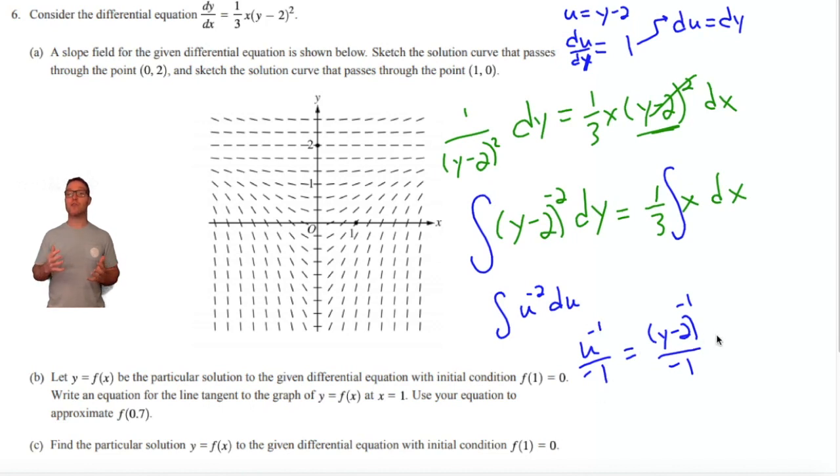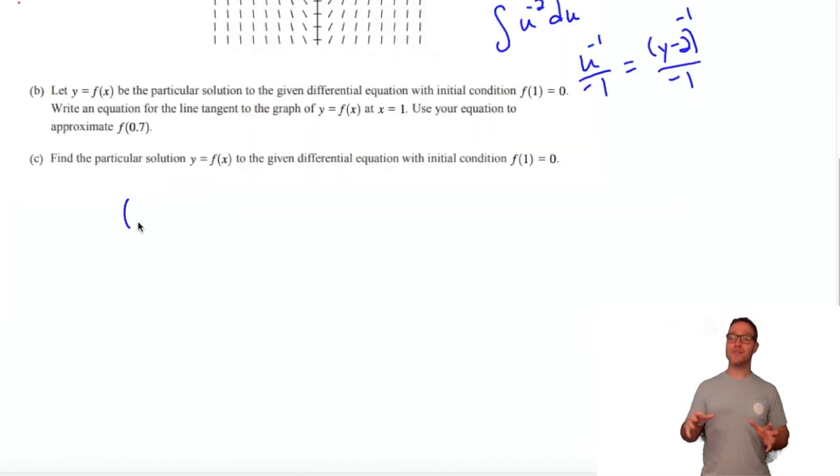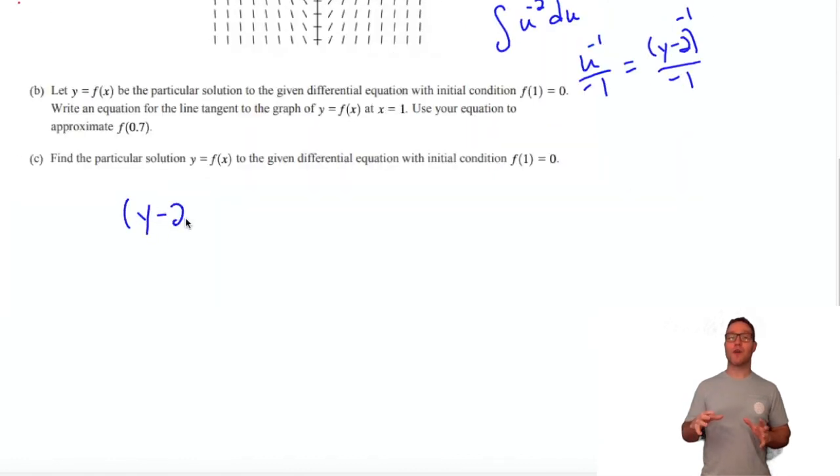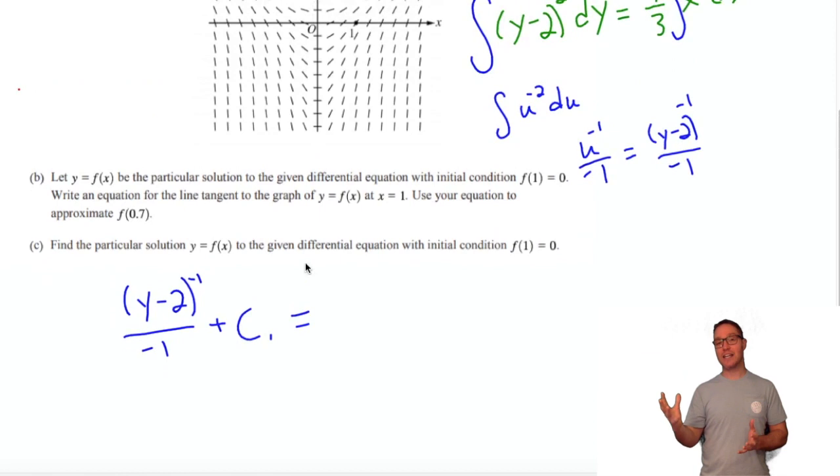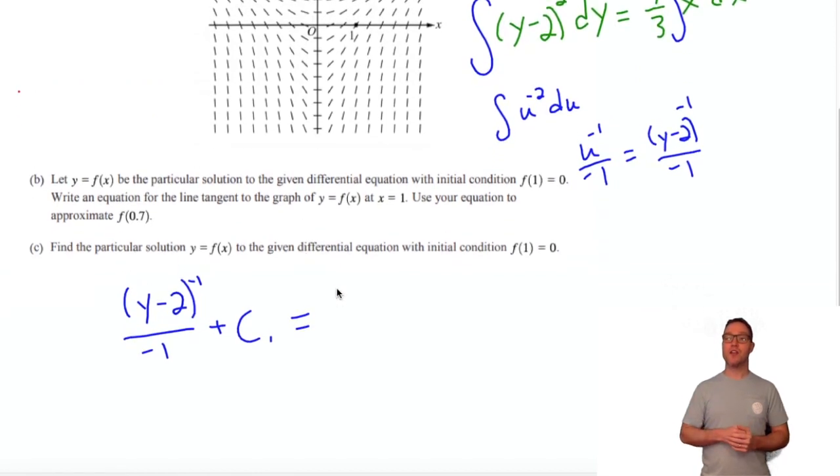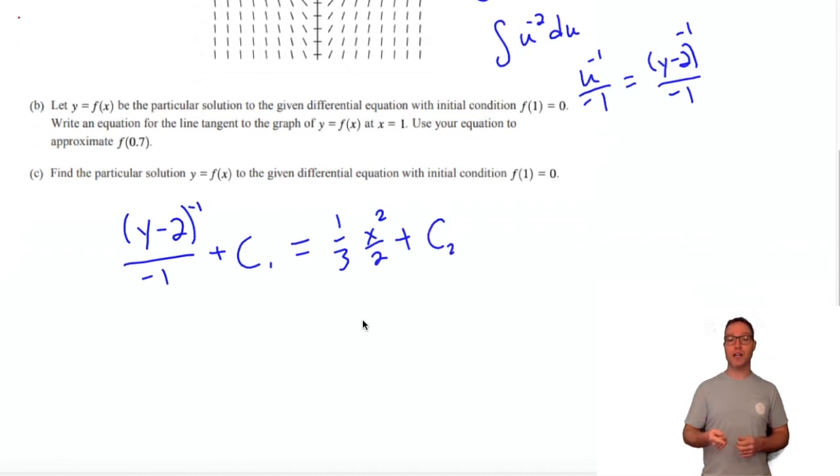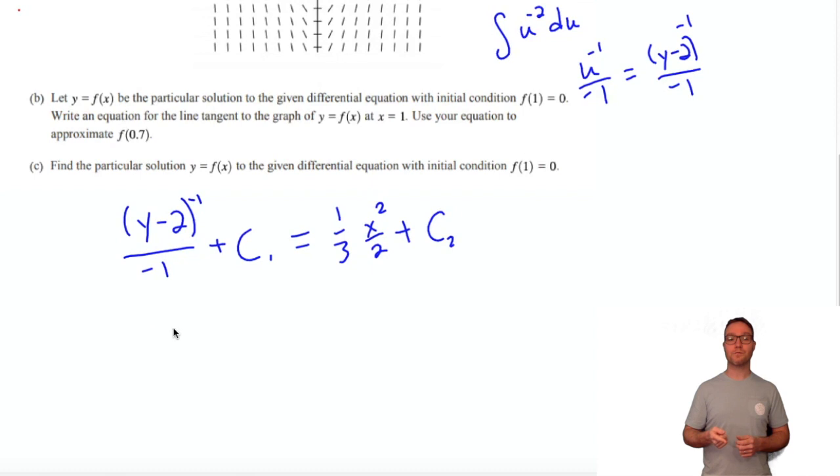That's easy to integrate. We're going to get u⁻¹/(-1). So on the left-hand side of the equation, we're going to have (y-2)⁻¹/(-1) plus a constant. I'm going to call it c₁ because we're going to have a second constant on the other side. So we're going to do (1/3)x - integrate that, you get (1/3)x²/2. That's the power rule for integrals, plus another constant c₂.